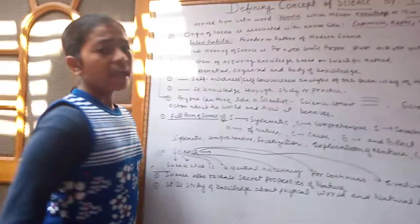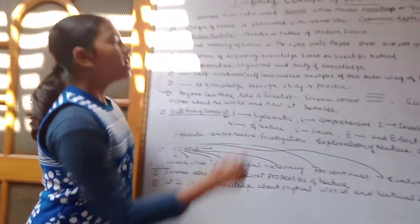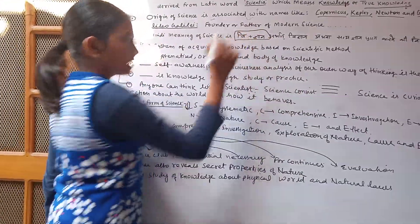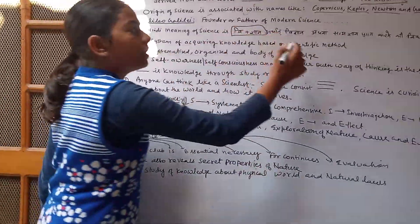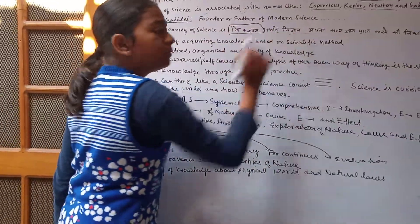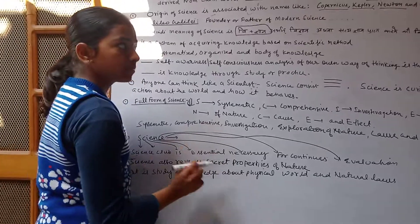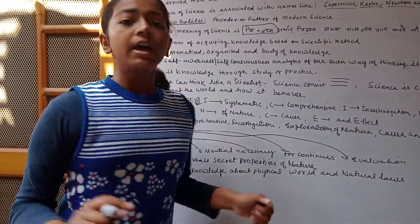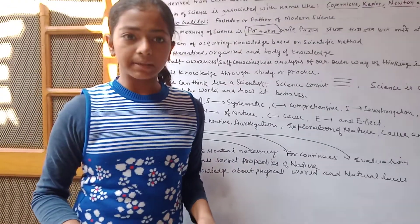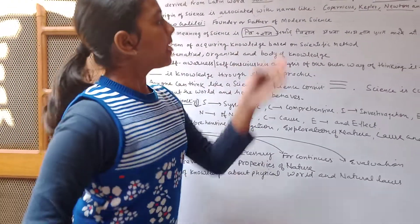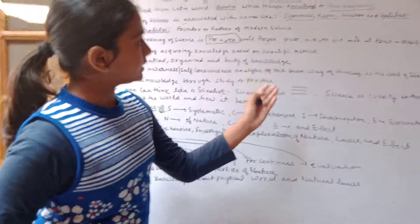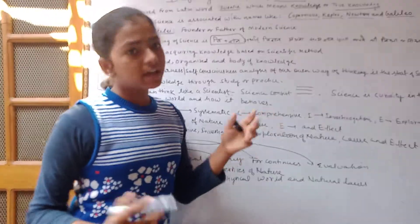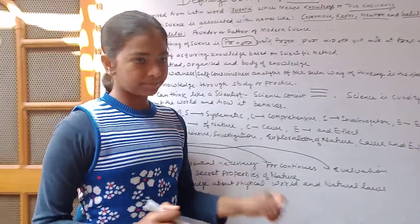In Hindi, we call science as Vigyan or Phat Vigyan. This means Satyagyan praat karne ki vidha — the method of acquiring true knowledge.